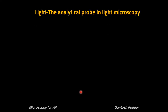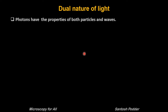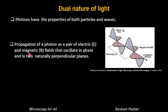Visible light is the agent used as an analytical probe in a light microscope. This is a form of energy called electromagnetic radiation. This visible light appears as white, which is a combined light of individual rainbow colors ranging from around 380 to 740 nanometers. This energy is contained in discrete units or quanta called photons that have both the properties of particles and waves. These photons propagate as a pair of electric and magnetic fields that oscillate in phase and in two naturally perpendicular planes.